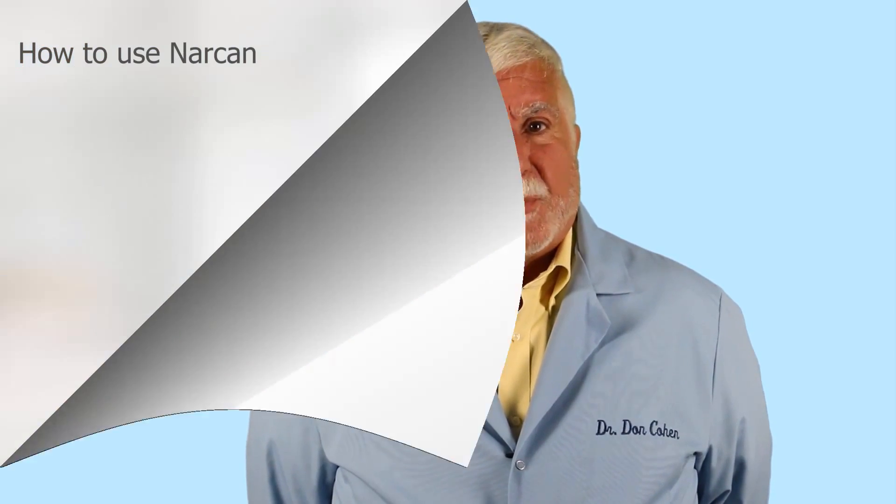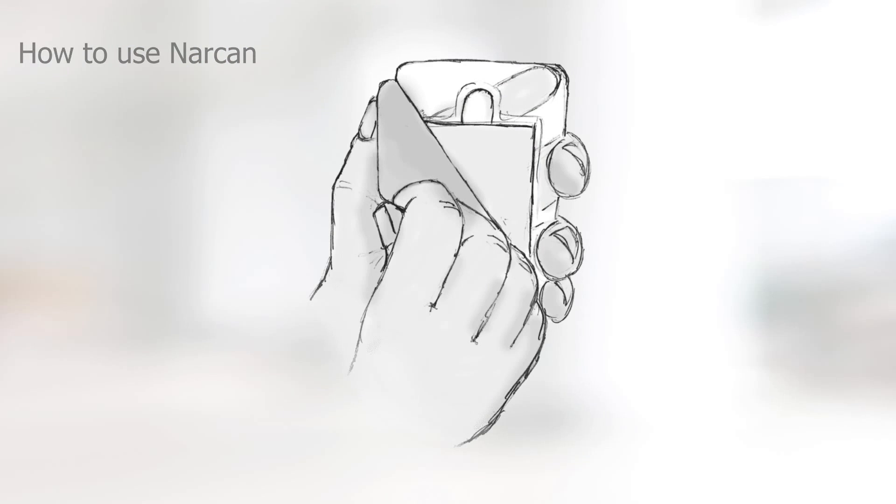To administer Narcan nasal spray, peel back the package to remove the device. Do not prime the device, as there is very little fluid and any priming may reduce the total dose delivered to the patient. Place and hold the tip of the nozzle in either nostril until your fingers touch the bottom of the patient's nose. Press the plunger firmly to release the dose into the patient's nose.